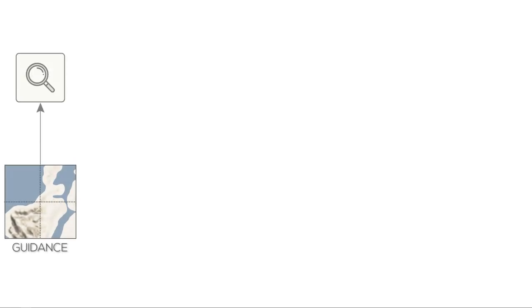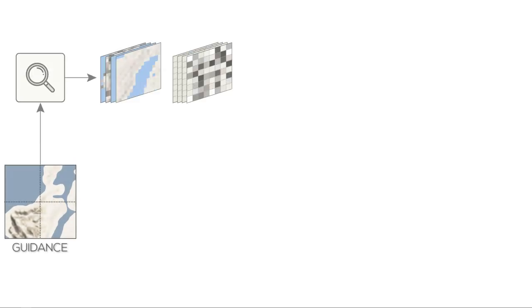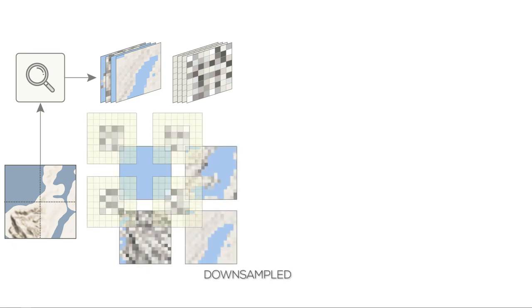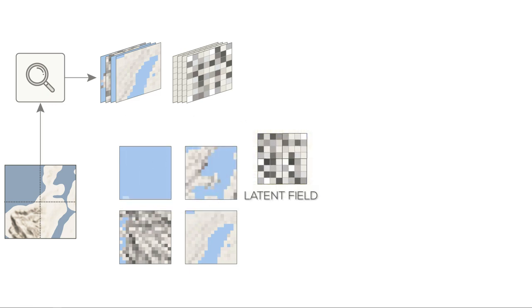We can use an image as a guidance map for our synthesized result. The guidance image is split into blocks and a latent tile is queried for each block. The latent tiles are combined to form a latent field and cropped to control the size of the output patches.